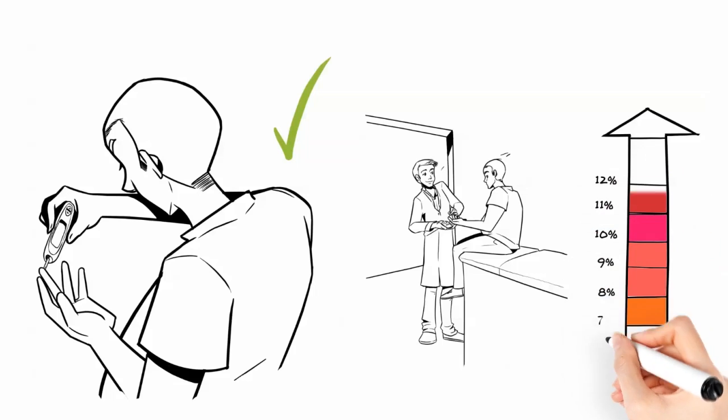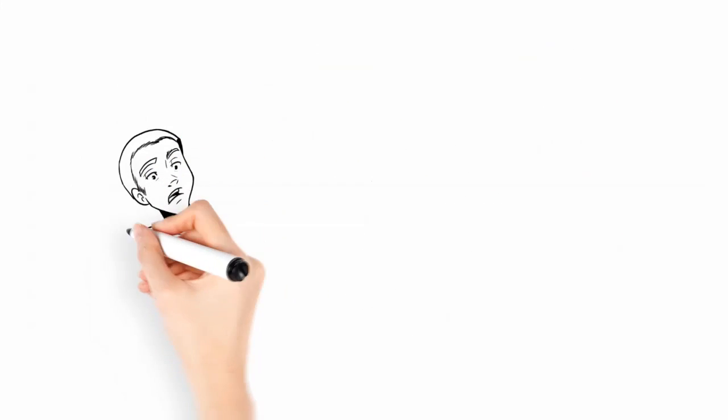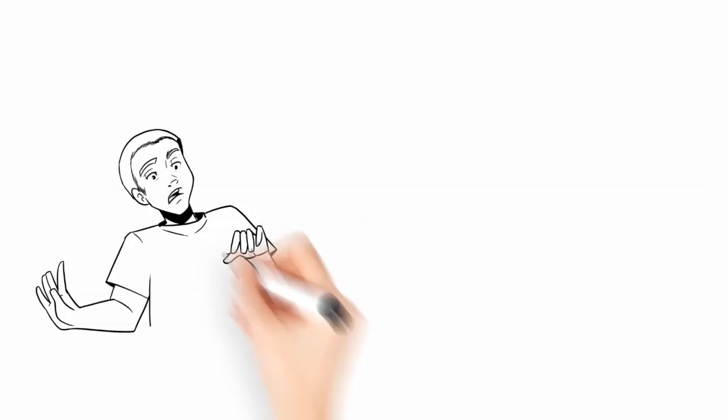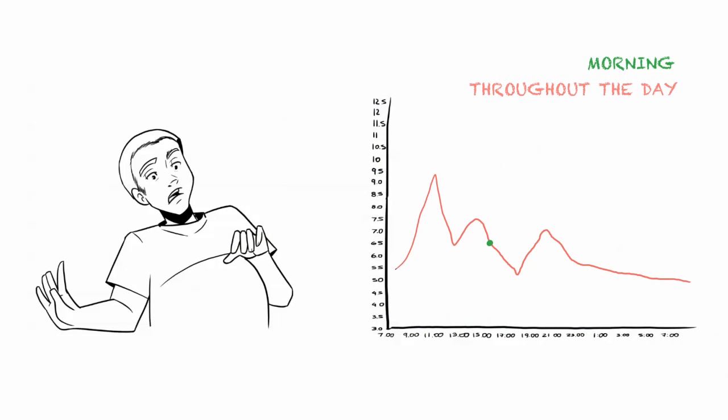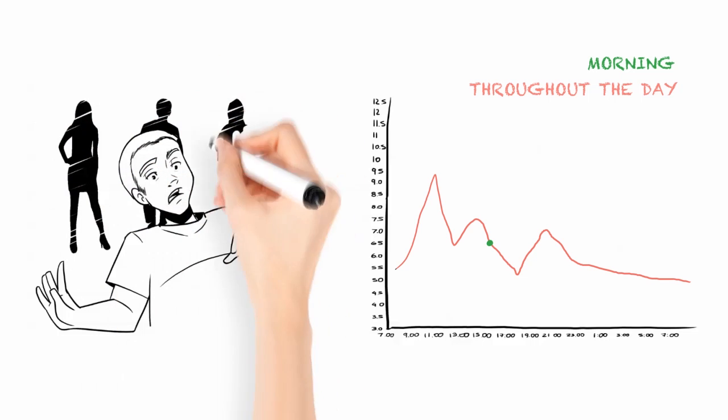he was surprised to discover his average daily level was 10%. John was shocked to learn that while his blood glucose was normal in the morning, it fluctuated wildly and peaked at high levels several times a day. He finally got the full picture. Here's the thing. John's story is not uncommon.